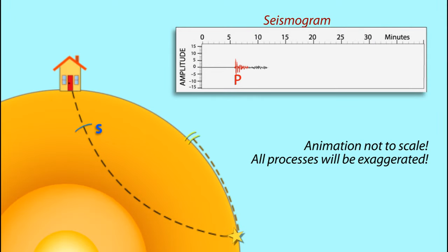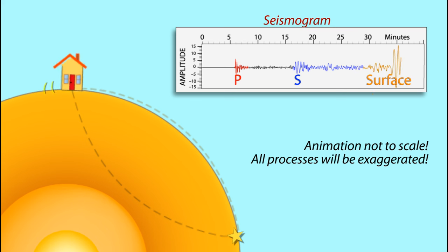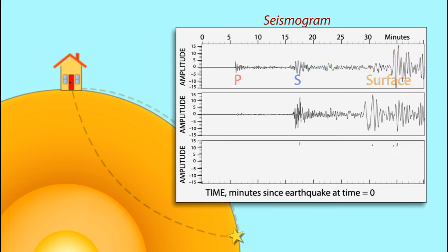Earthquakes produce different types of seismic waves that can be identified on seismograms. But did you know that each seismograph station produces three different seismograms for each earthquake? Why is that? Doesn't one tell you how big the earthquake was?